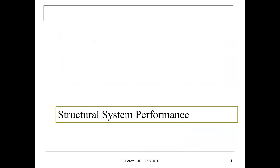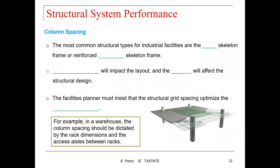Let's talk about the structural system performance. As stated at the beginning of this lecture, the plan is not for you to become a civil engineer and know how to build a building, but the idea is for you to understand how those systems are defined so you can understand how they impact the design and layout of the facility. The most common structural types for industrial facilities are the steel skeleton frame or reinforced concrete skeleton frame, in terms of column spacing. Column configuration will impact the layout, and the layout will affect the structural design.